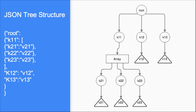JSON can be converted into a tree, and YAML also essentially forms a tree — an acyclic graph. We decided to do a BFS algorithm on it.